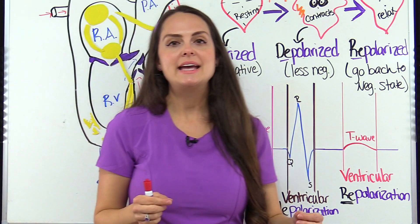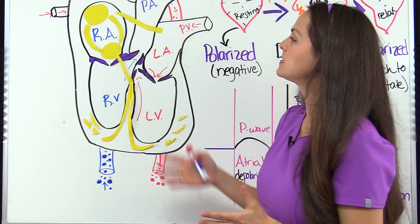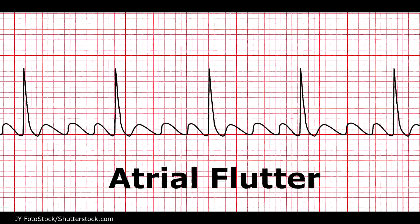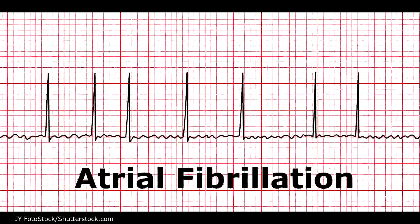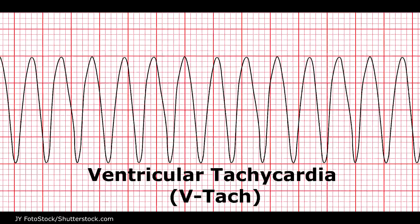But if there's an issue with the system, we can get dysrhythmias — we can get atrial flutter, atrial fibrillation, V-tac, etc.